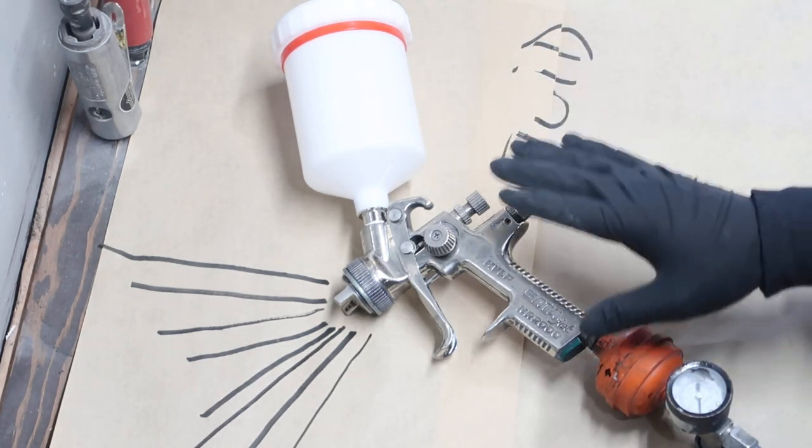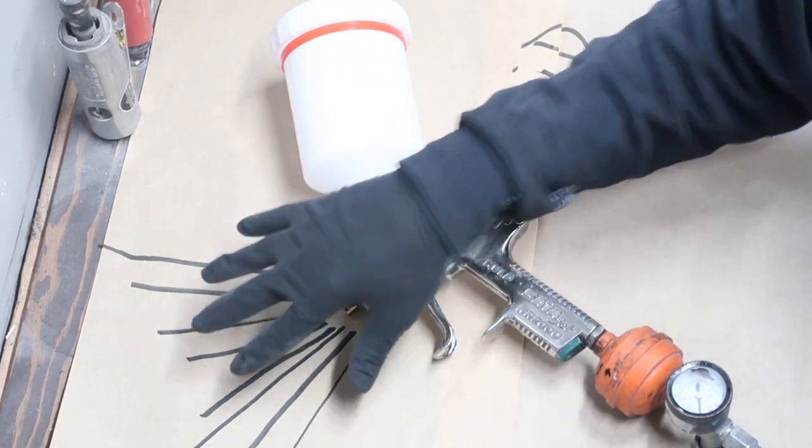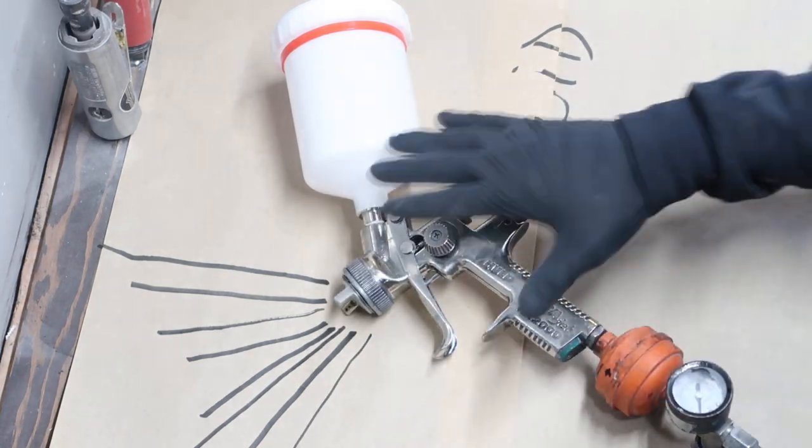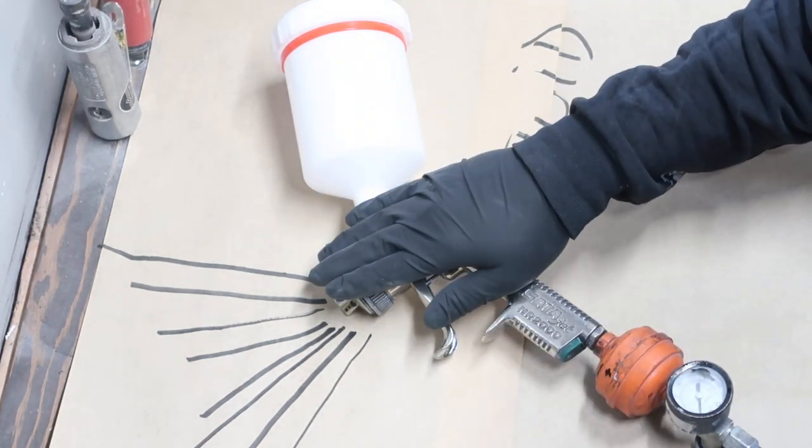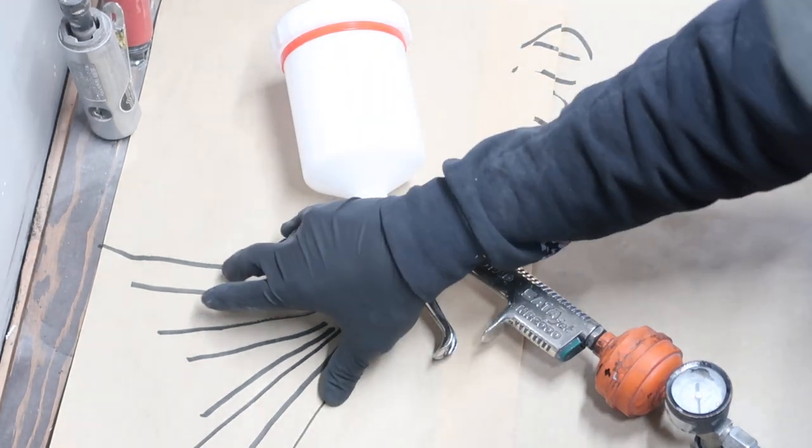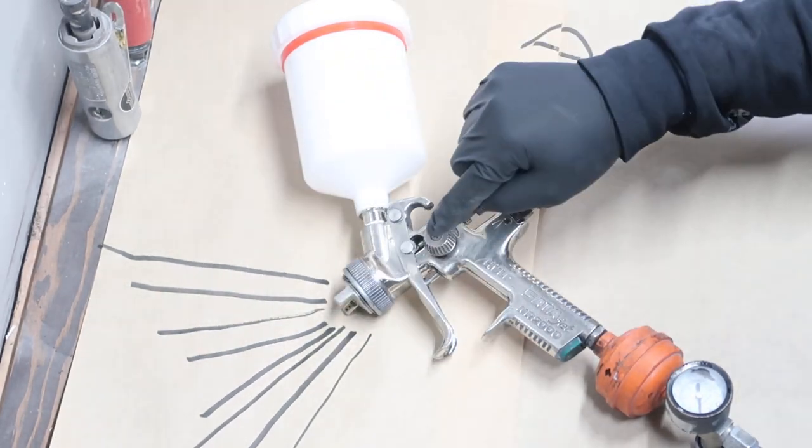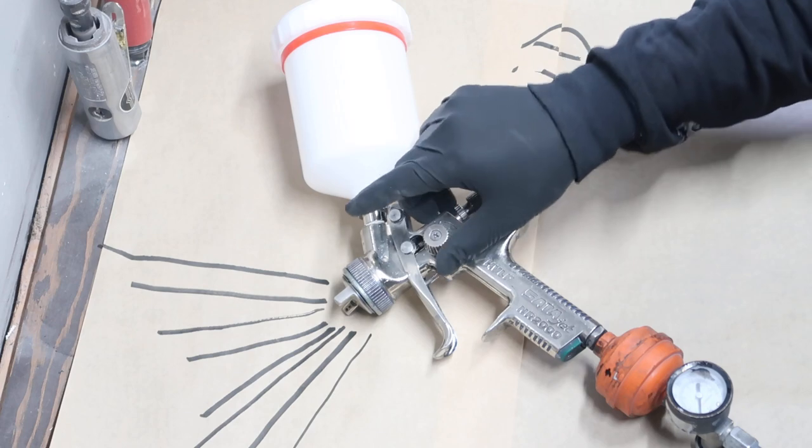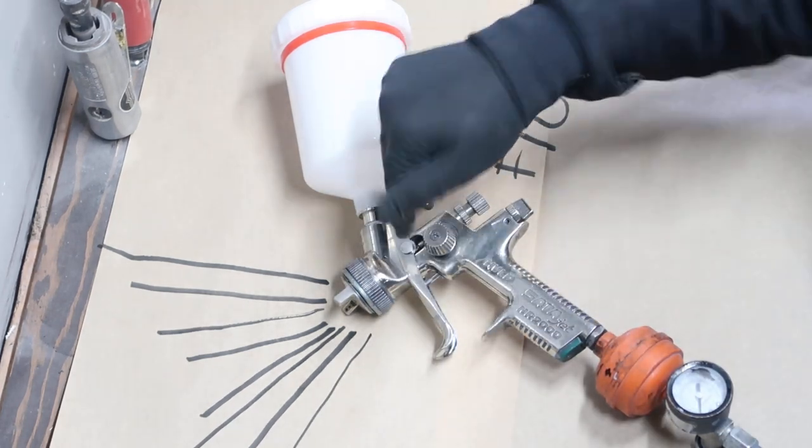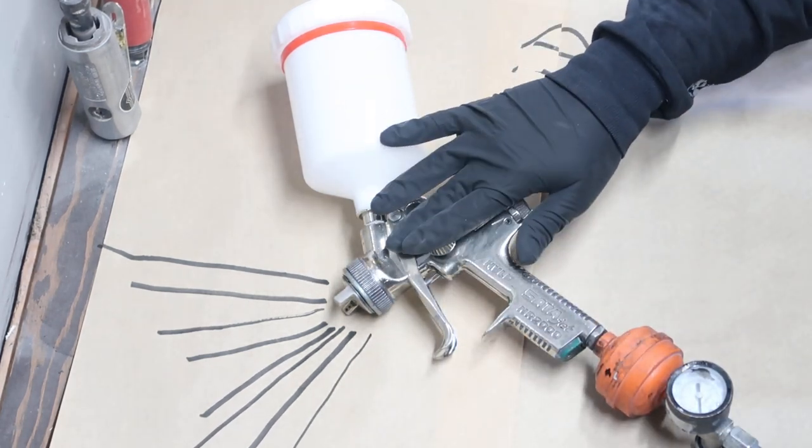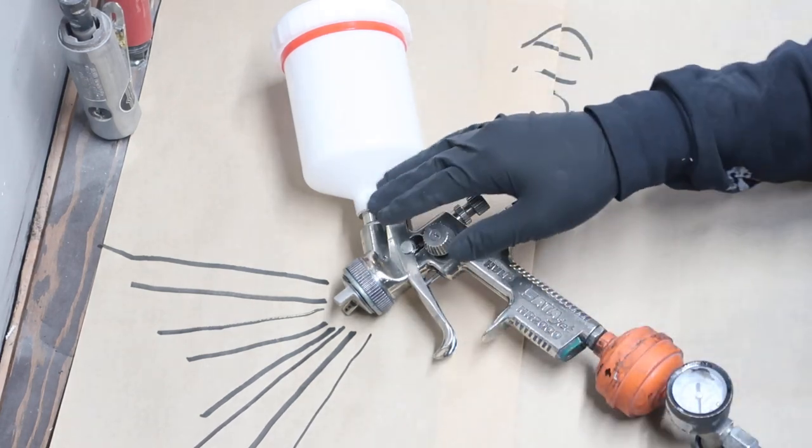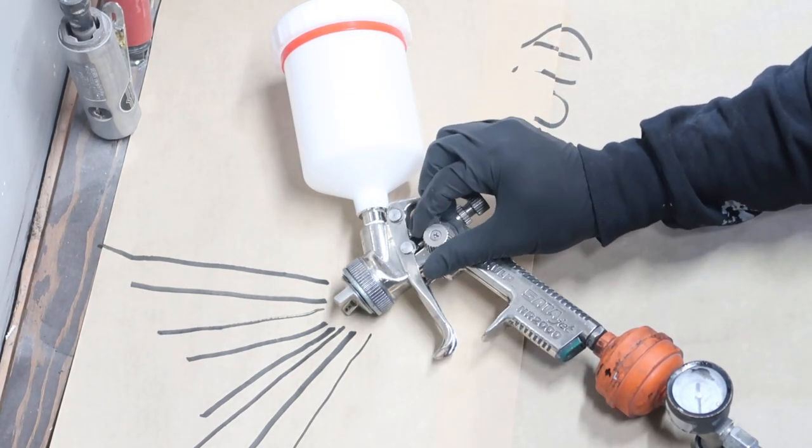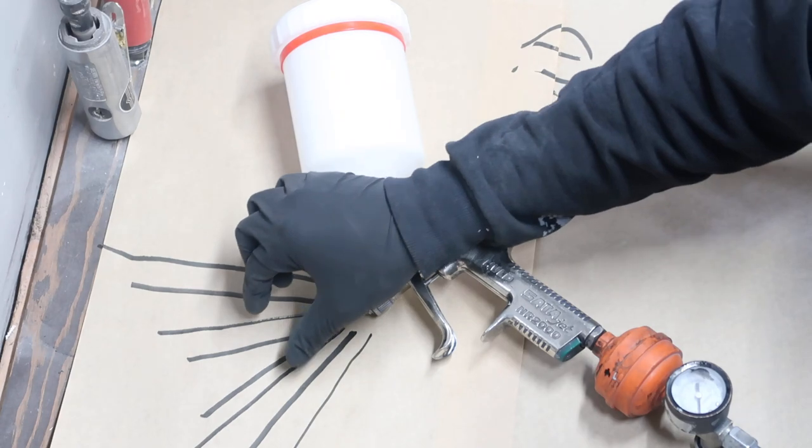This controls the flare. If you close it all the way down it will be super narrow. If you open it, it will be super wide. I usually just keep it all the way open unless I'm doing a bumper that has really hard areas to reach. Then I close it up a little bit, maybe this flare or this tiny one, depending on what I'm shooting.